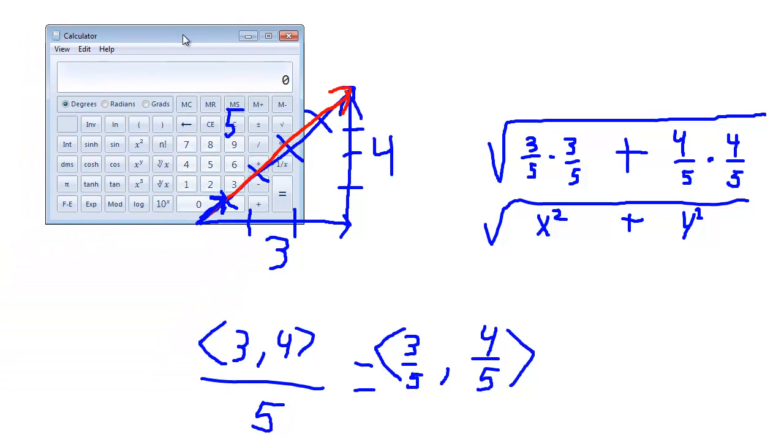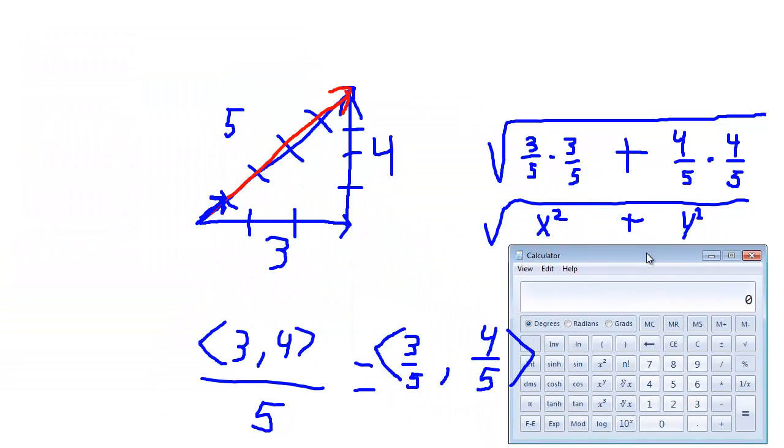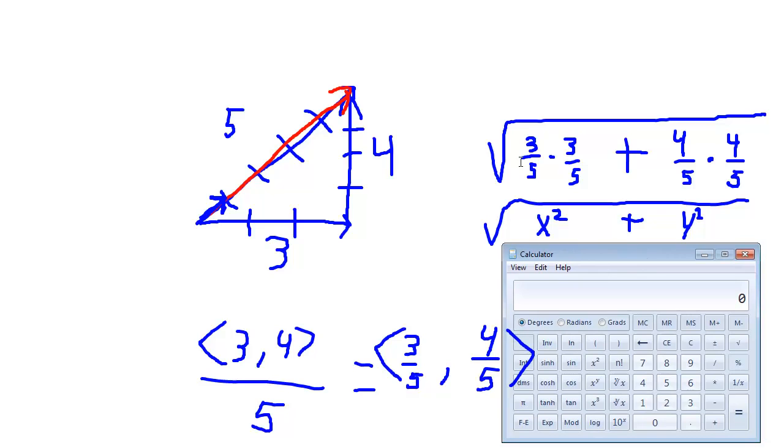Let's do three divided by five first. So three divided by five equals point six. And then I want to multiply that by itself again. So point six times point six is point three six.